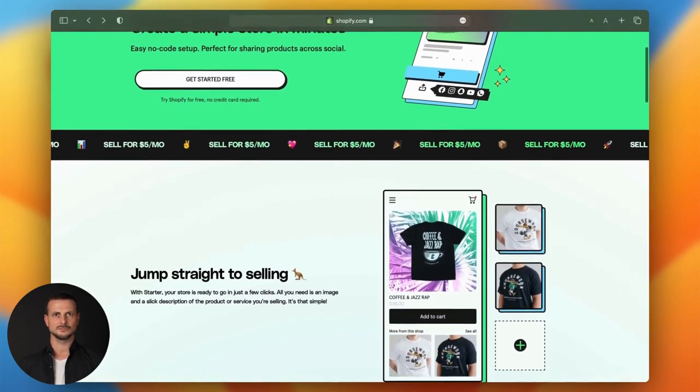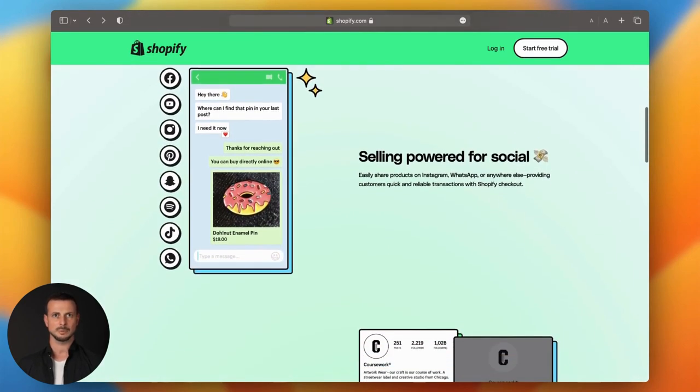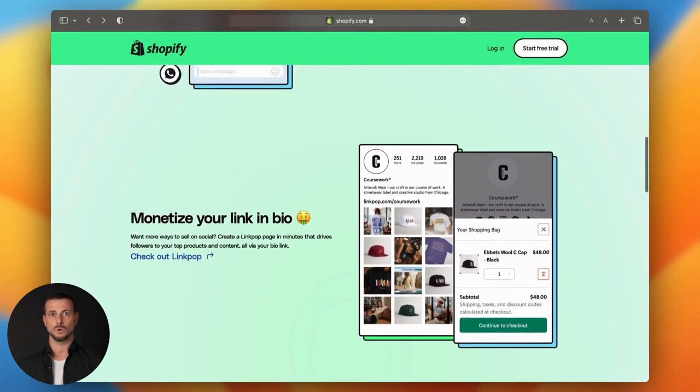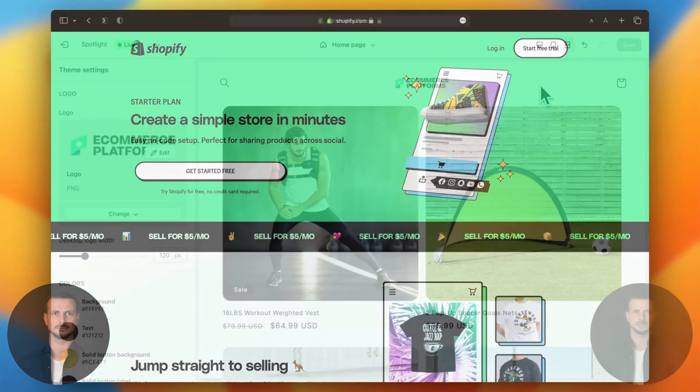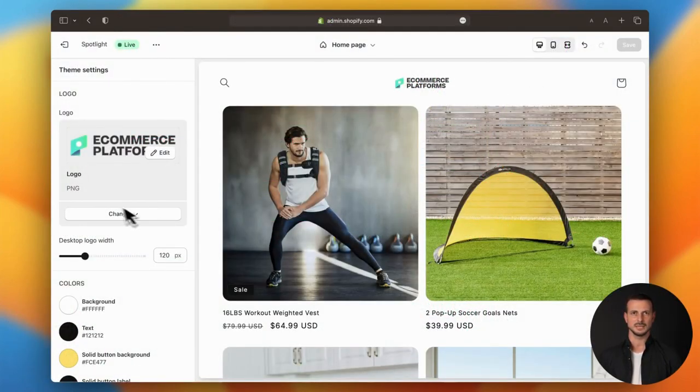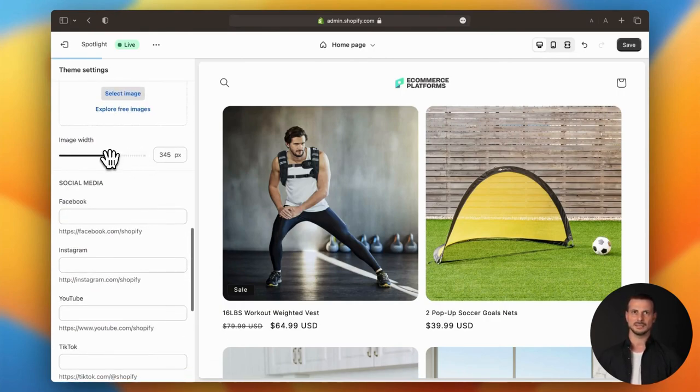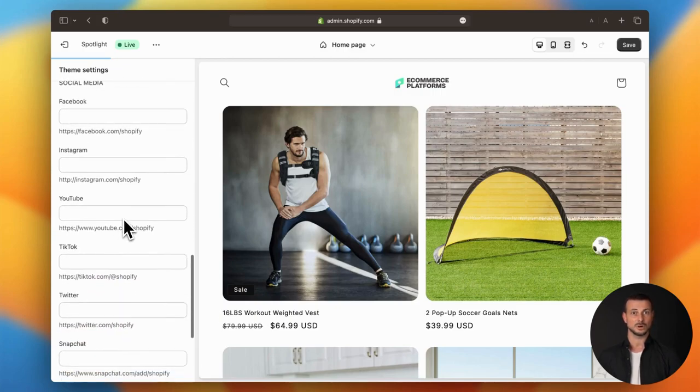Think of it as a plan tailored for selling products through social media, email, SMS, WhatsApp, and anywhere else you might want to share a link to a product. The best part is, the Starter plan is designed with simplicity in mind. No complicated setups or endless hours of tweaking required. It's all about getting up and running quickly so you can start selling your products without breaking a sweat.